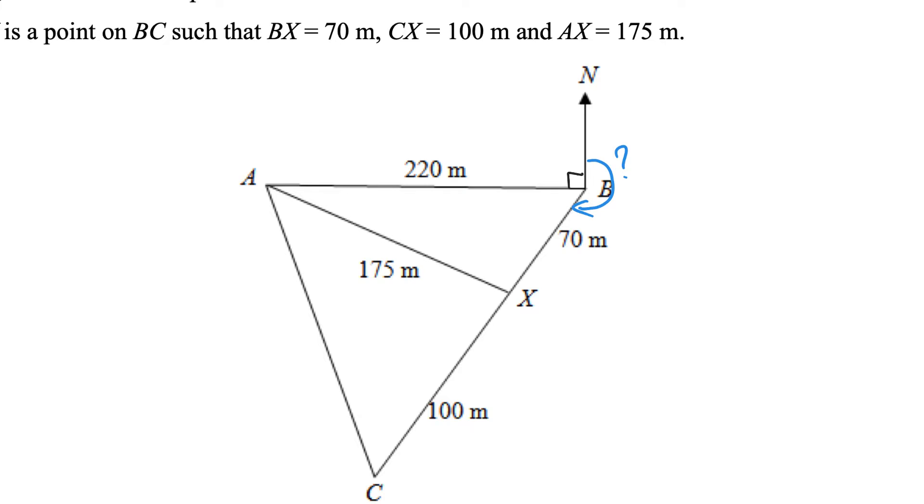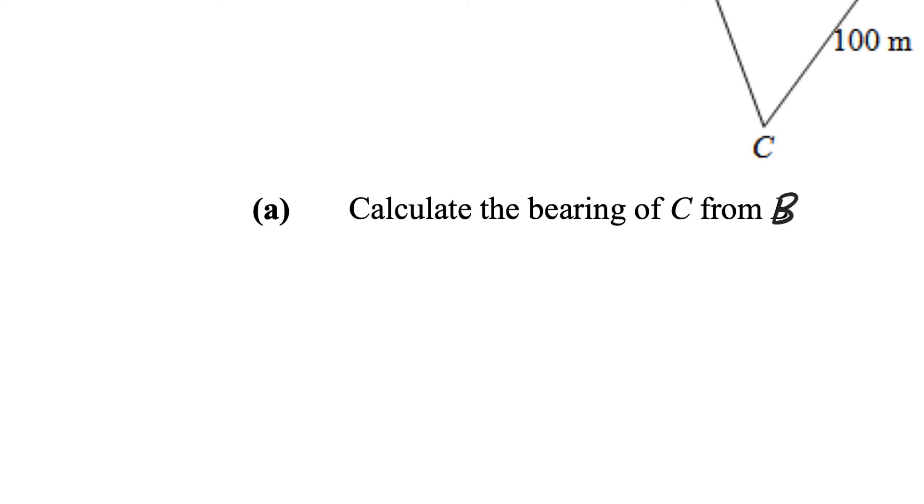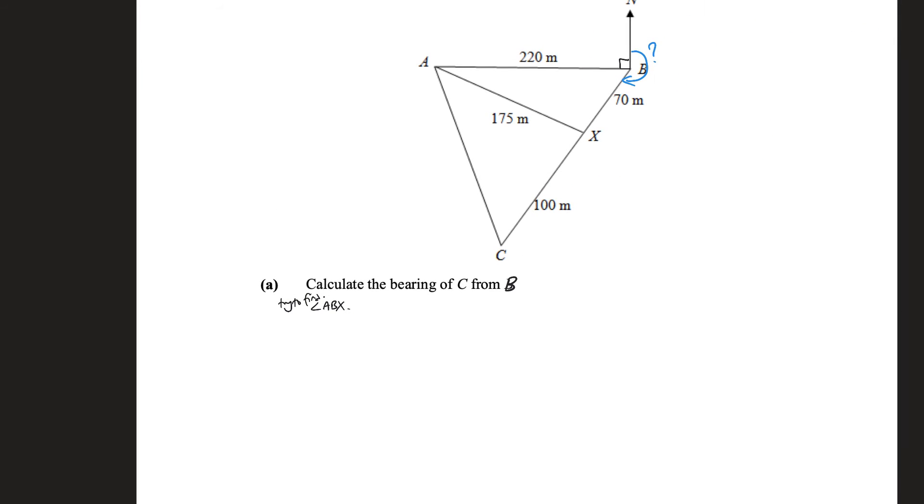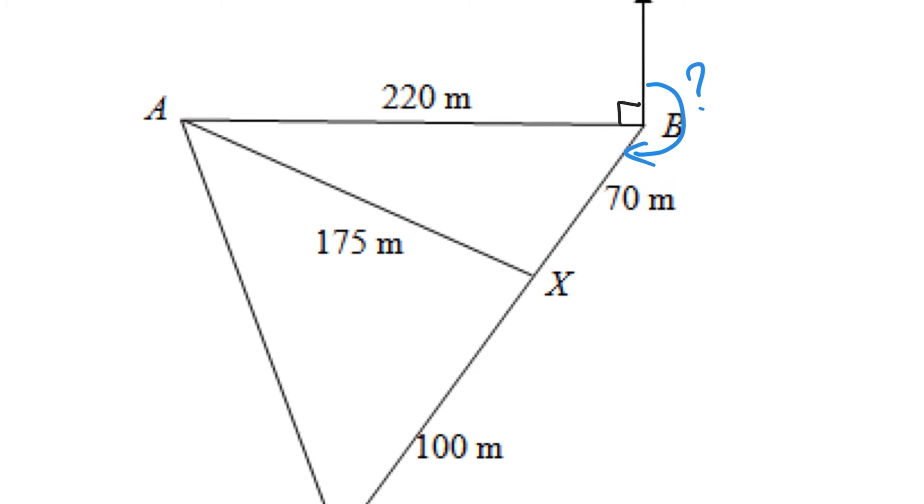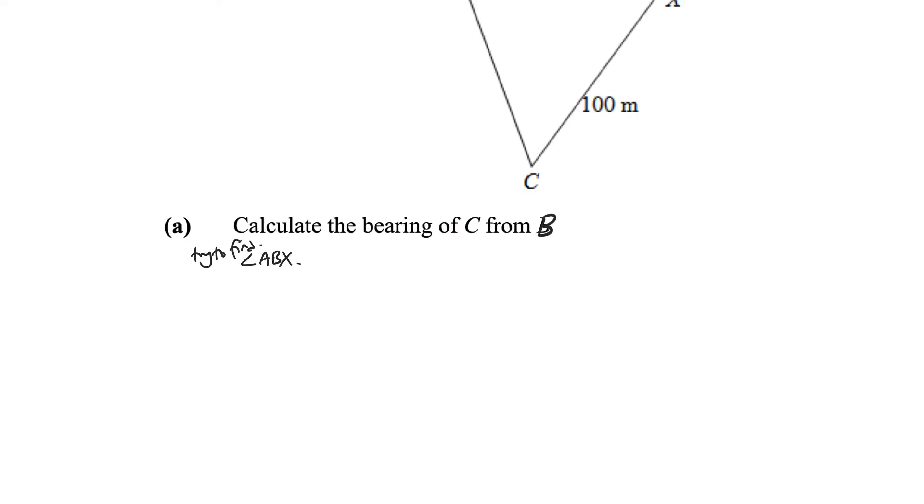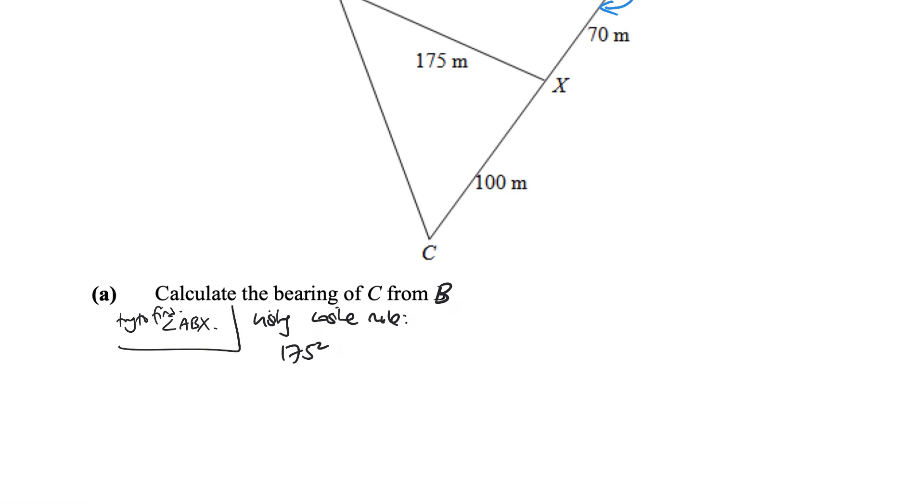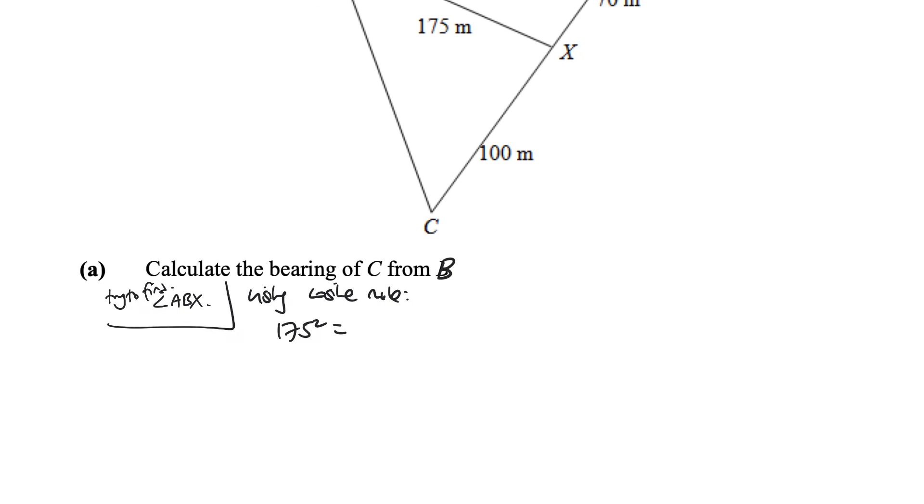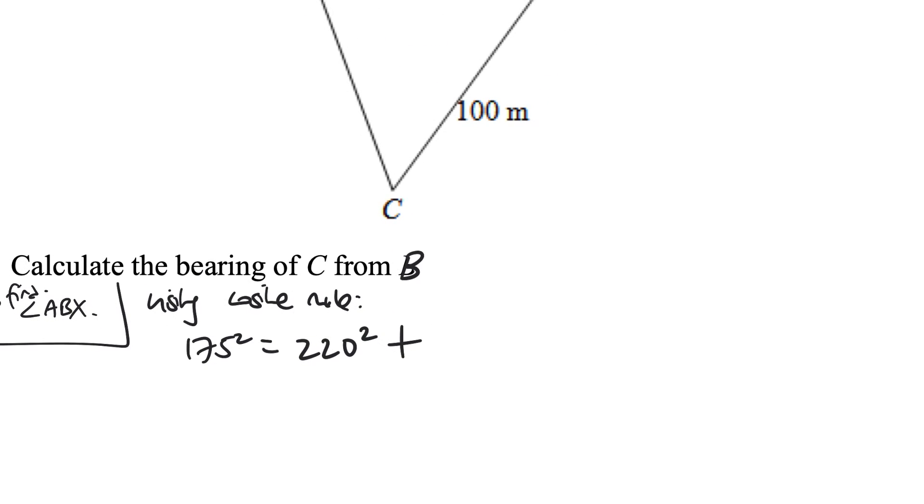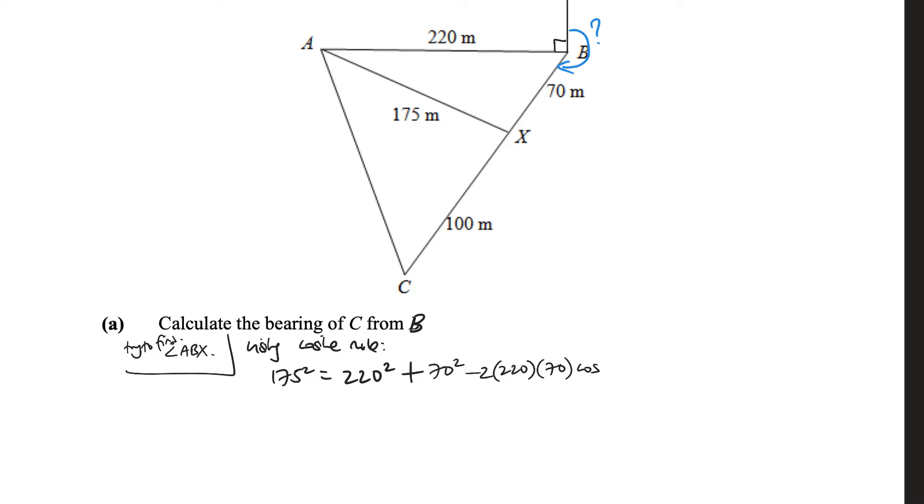So I can find angle ABX. Let's try to find angle ABX. So it's always cosine of the angle in between. So we can say 175 squared equals 220 squared plus 70 squared. And I'll write it down so it's clearer. So using cosine rule, 175 squared, we already know that side. Just like this is your A squared, basically. And then B squared plus C squared, which is 220 squared plus 70 squared minus 2BC cosine the angle in between, which is the angle that you're trying to find, ABX.